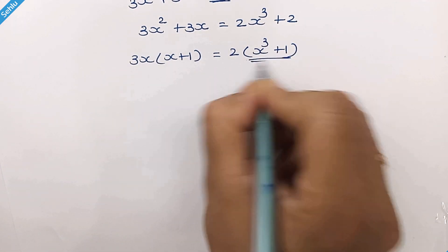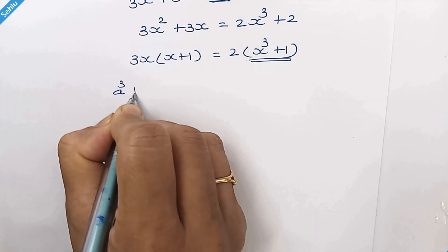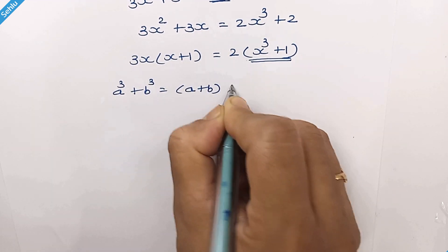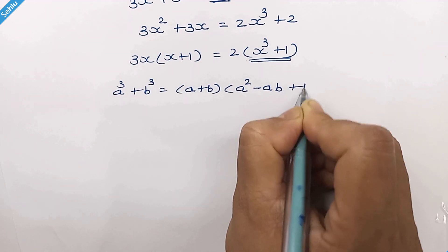So it will be taking 2 common. For this part, we can apply an identity of a cube plus b cube.